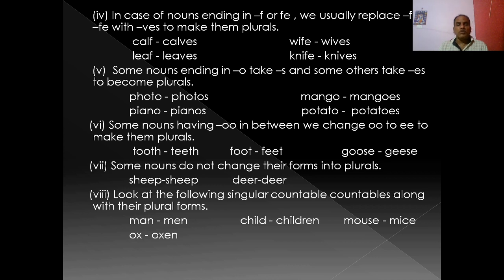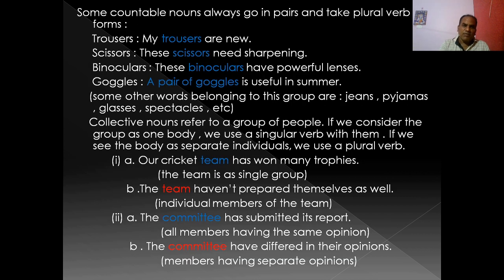Some singular countable nouns change completely in their plural forms: man → men, child → children, mouse → mice, ox → oxen. So we know how to make singular nouns into plurals by adding S, ES, or by other changes.